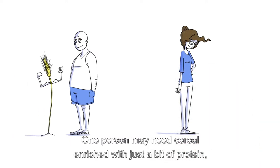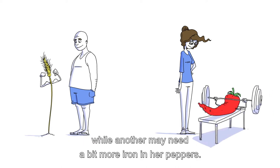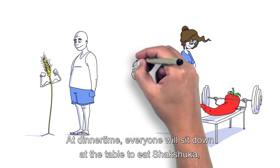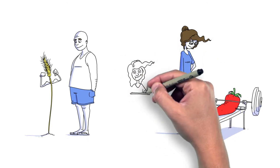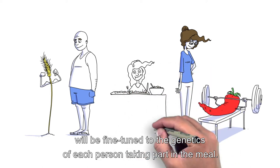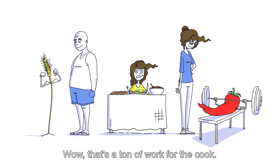One person may need cereal enriched with just a bit of protein, while another may need a bit more iron in her peppers. At dinner time, everyone will sit down at the table to eat shakshuka. But the nutritional values of each serving will be fine-tuned to the genetics of each person taking part in the meal. Whoa! That's a ton of work for the cook!